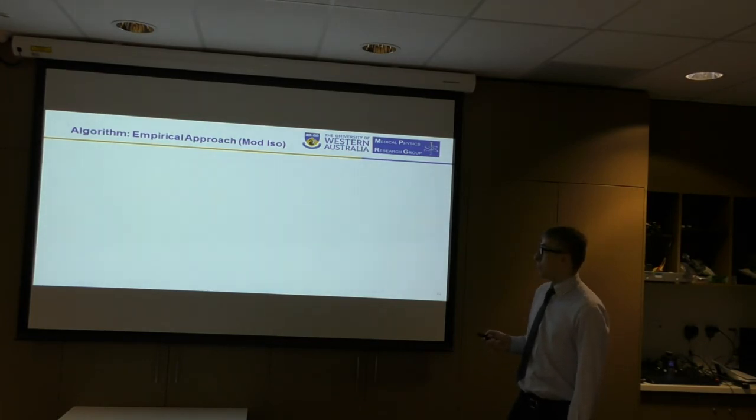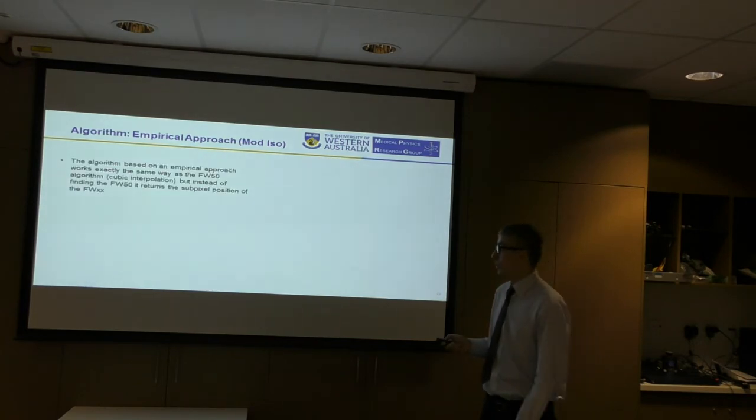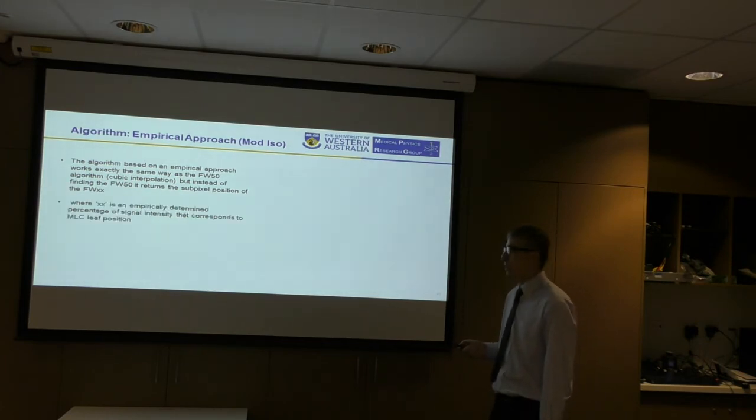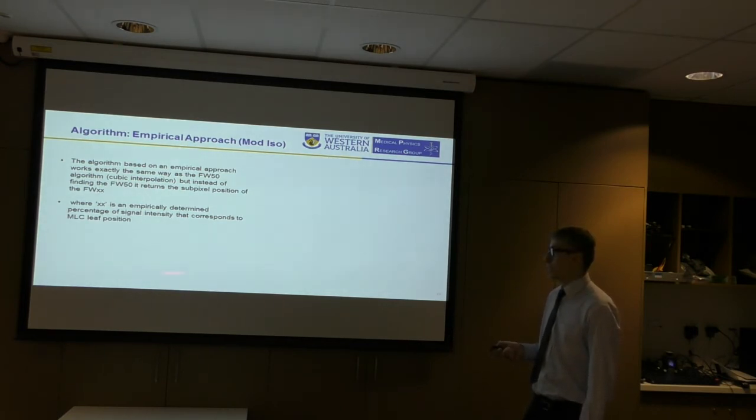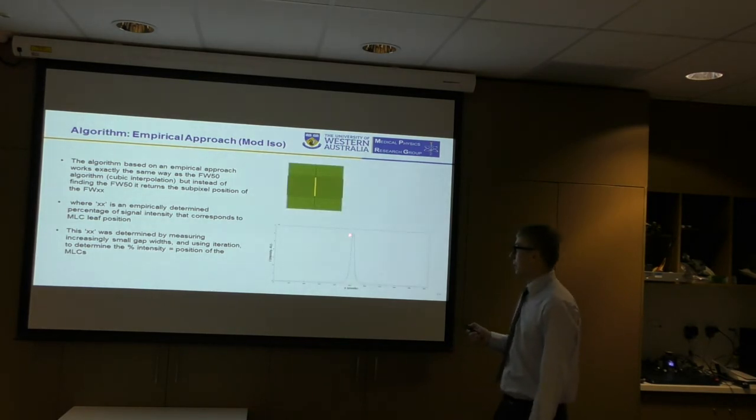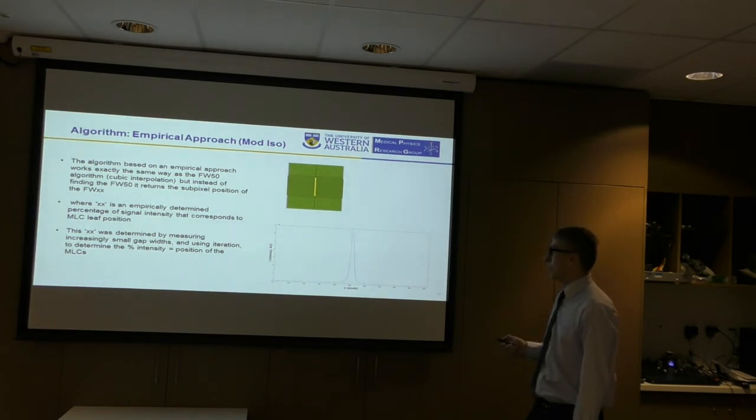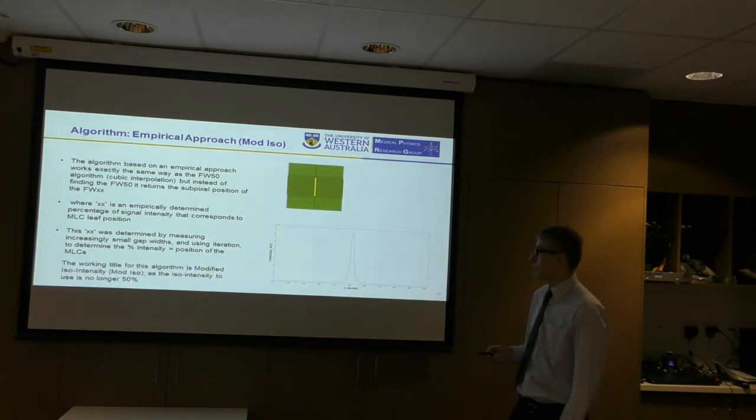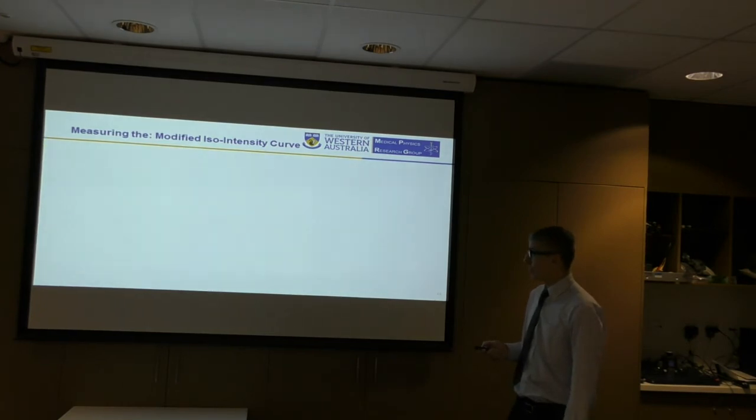The final algorithm I'm going to introduce is a modified version of the full width 50 algorithm. It works exactly the same way using cubic interpolation, but instead of finding the full width 50, it returns the sub-pixel position of full width XX. What is XX? It's an empirically determined percentage of signal intensity that we measure, and this is the measured percentage of signal intensity that corresponds to the MLC leaf position. We work this out by taking measurements of very increasingly small gap widths, and then using iteration along the signal profile to determine what percentage is equal to the position of the MLCs. It's got a working title of modified isointensity, as the isointensity used is no longer 50%.